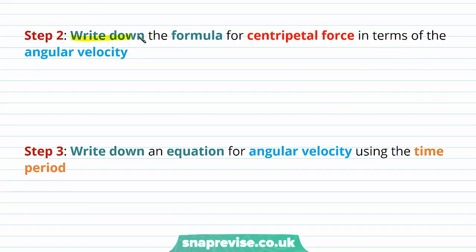Step 2: write down the formula for centripetal force in terms of the angular velocity. Centripetal force F is equal to mass M times radius R times angular velocity squared.